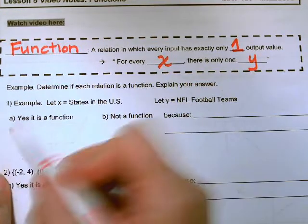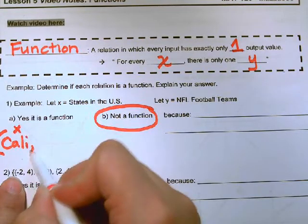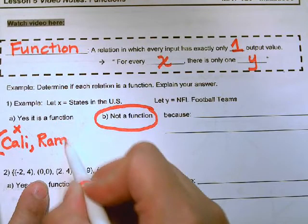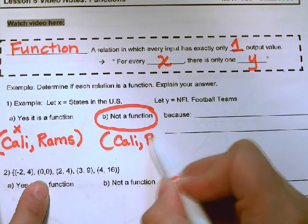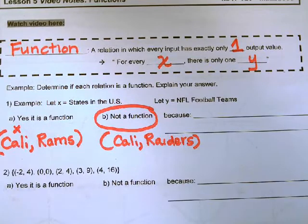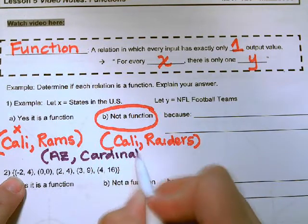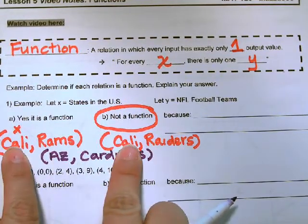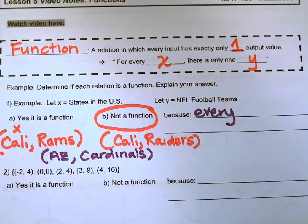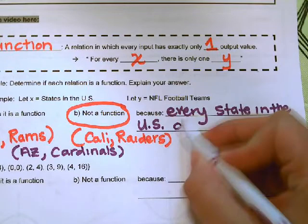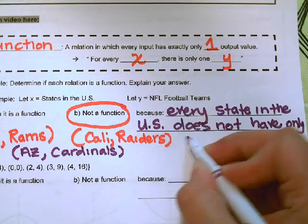If you know about football, you would know that this would not be a function because if X was California, it could have an output of the Rams. But California could also have the football team the Raiders. So that's just one example. Even though Arizona has one football team, the Cardinals, this is not a function because we found a state that has more than one output. So we would put no because every state in the U.S. does not have only one football team.